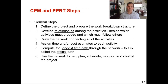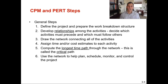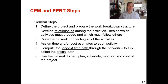The steps for CPM and PERT are exactly the same — six steps. First, define the project and prepare the work breakdown structure. Second, develop the relationships among the activities — decide which activities precede and which ones must follow: what's step one, step two, step three? That's step number two in our process.